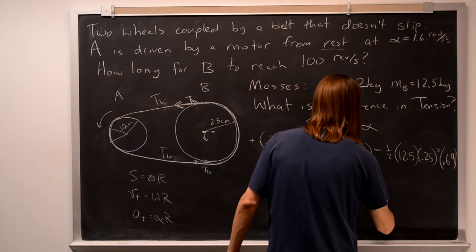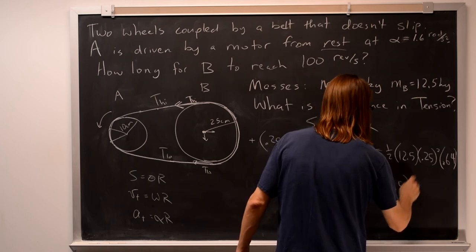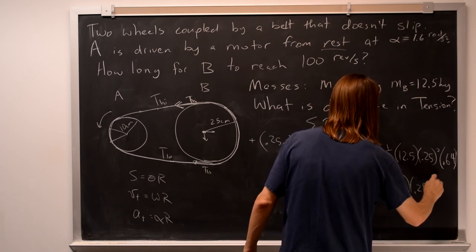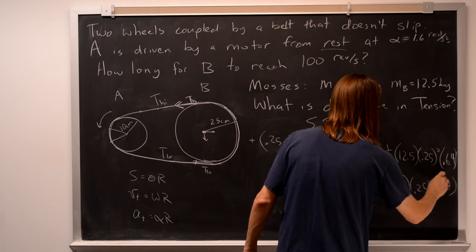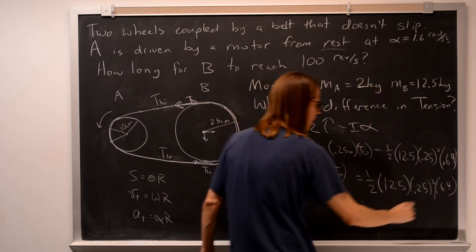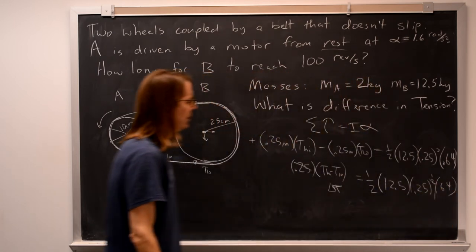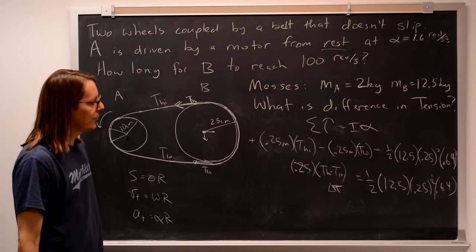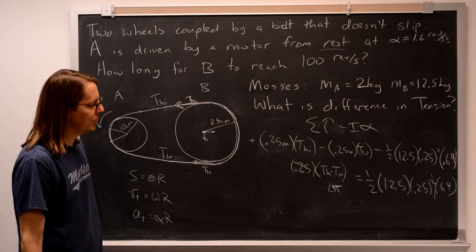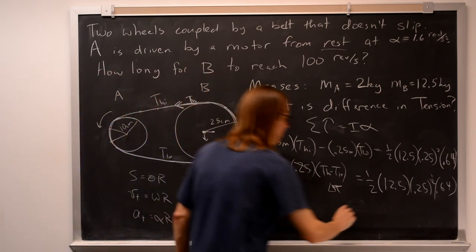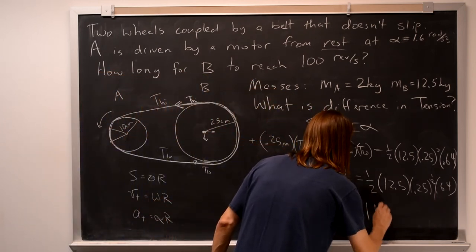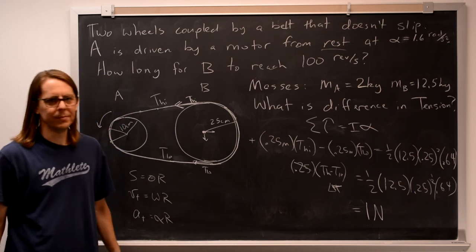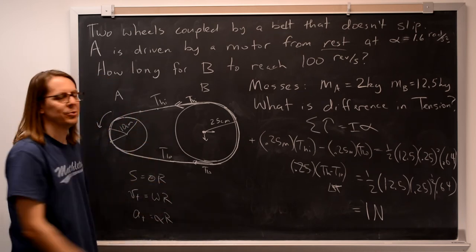Equals all this again, 1 half, 12.5, 0.25 meters squared, 0.64. So you could make your life a little easier by doing that. Cancel the 0.25, cancel the one on the right. So for delta T, it's a half times 12 and a half times 0.25 times 0.64. And this was a complete accident, but that's 1. So the answer is 1 for the difference in tension between the two.